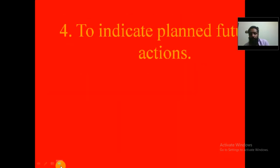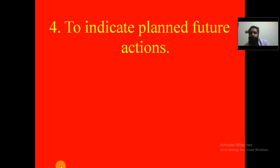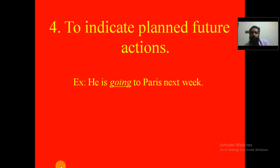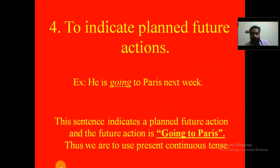The next usage is to indicate planned future actions. Example: 'He is going to Paris next week.' This sentence indicates a planned future action — going to Paris — which will happen in the future, so we use the present continuous tense.